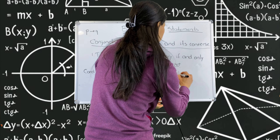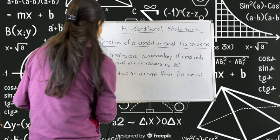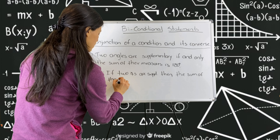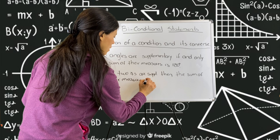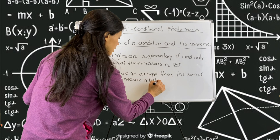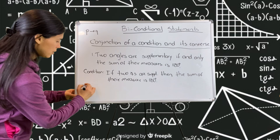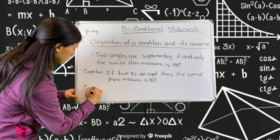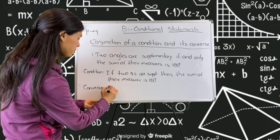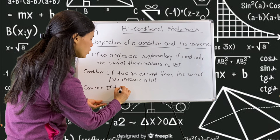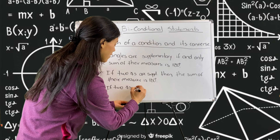Let's take the first part — always start with 'if.' If two angles are supplementary, then the sum of their measures is 180 degrees. There is the condition.